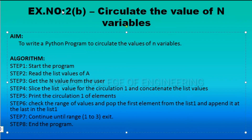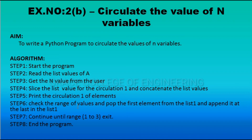Lab Exercise 2B — Circulate the Value of N Variables. Algorithm: Step 1: Start the program. Step 2: Read the list values of a. Step 3: Get the n value from the user for circulation. Step 4: Slice the list for circulation and concatenate. Step 5: Print the circulation elements. Step 6: Check the range, pop the first element and add it to the last. Step 7: Continue until range 1 to 3 then exit. Step 8: End the program.